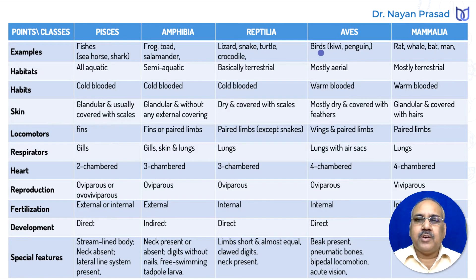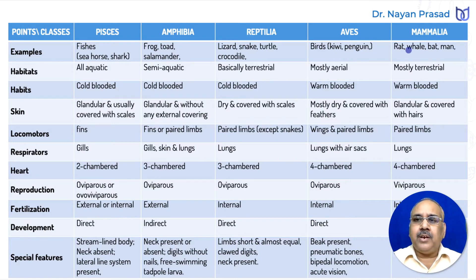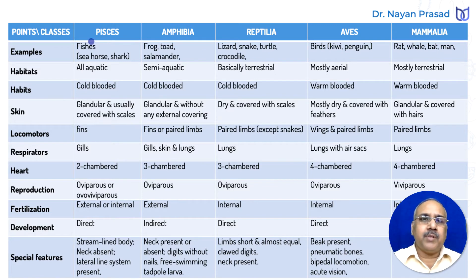Class Aves includes different birds. Remember, kiwi and penguin are also in this group. Mammalia includes rat, whale, dolphin, bat, and man. These are the different examples — you must remember them, and then we can compare their features.